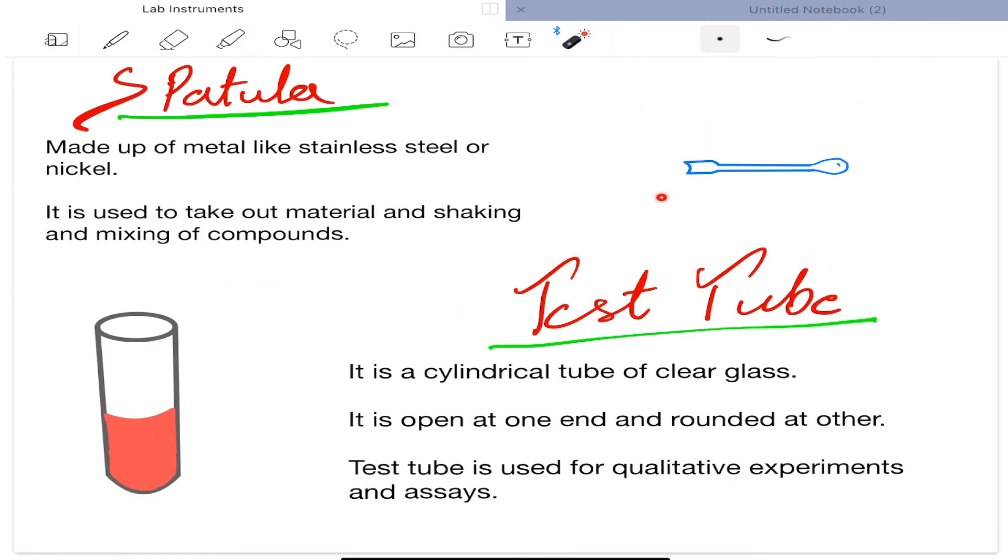Next is spatula. Spatula is made up of metal like stainless steel or nickel. It is used to take out materials, shaking and mixing of different compounds. Next is test tube. It is a cylindrical tube of clear glass. It is open at one end and rounded at the other. Test tube is used for qualitative experiments and assays.